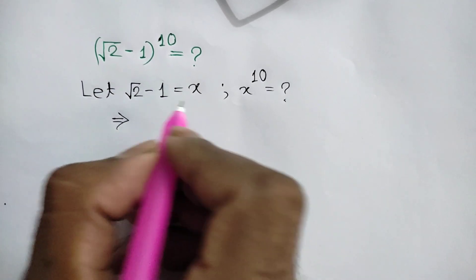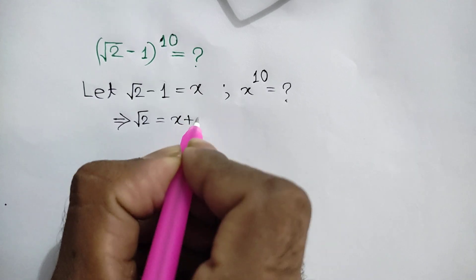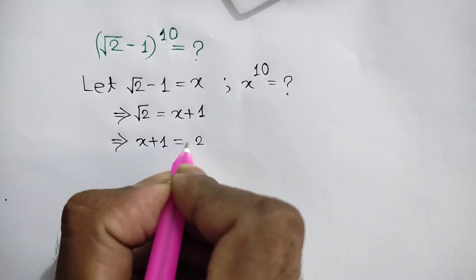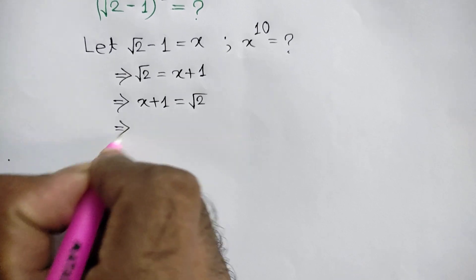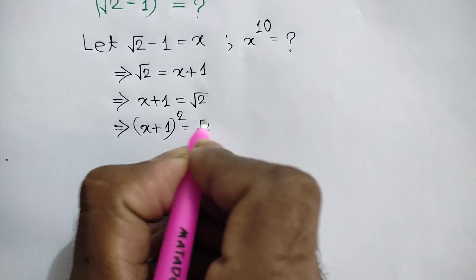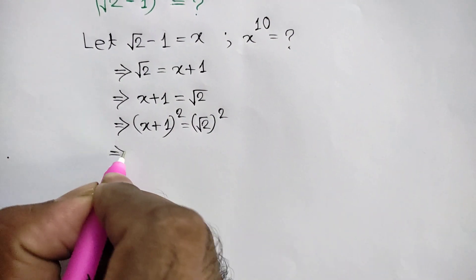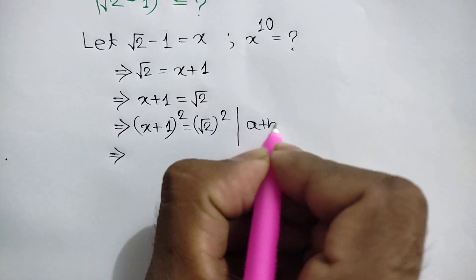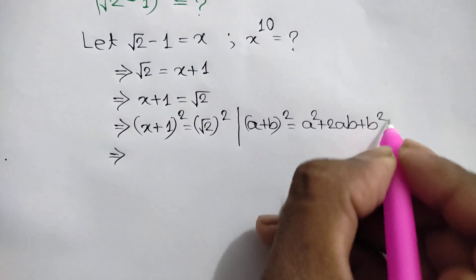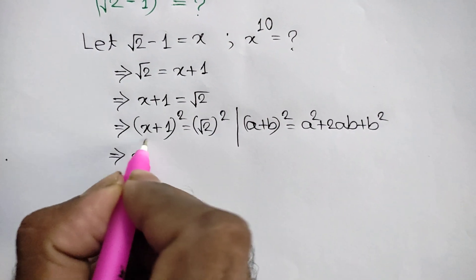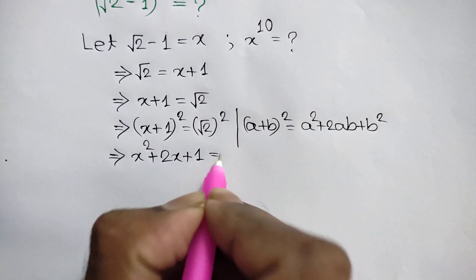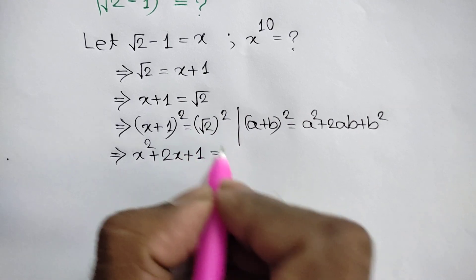Taking the negative 1 to the right side, we will get square root of 2 is equal to x plus 1. Or, changing sides, we will get x plus 1 is equal to square root of 2. Now squaring both sides, we can write x plus 1 whole square is equal to square root of 2 whole square. We know that (a + b)² = a² + 2ab + b², so we can write x² + 2x + 1 is equal to 2.